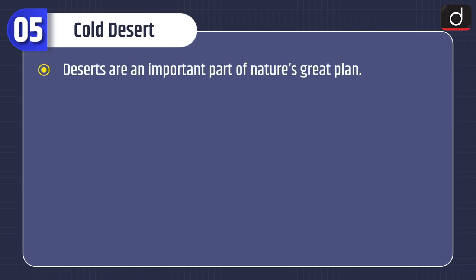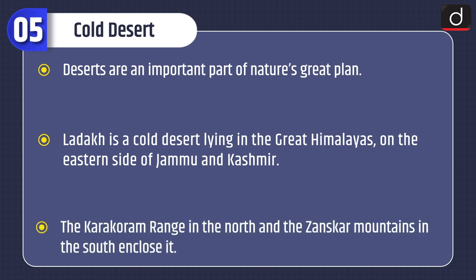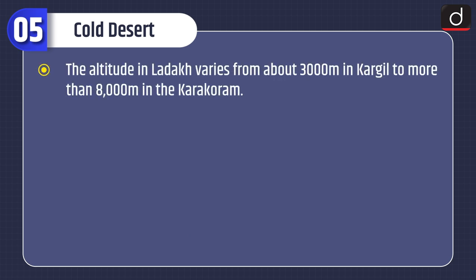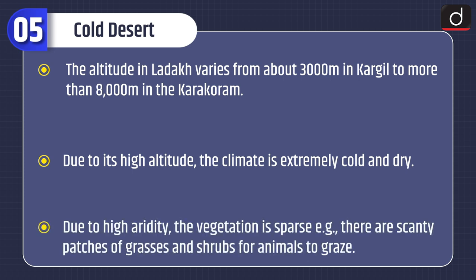Cold deserts are an important part of nature's great plan. Ladakh is a cold desert lying in the Great Himalayas on the eastern side of Jammu and Kashmir. The Karakoram range in the north and the Zanskar mountains in the south enclose it. The altitude in Ladakh varies from about 3,000 m in Kargil to more than 8,000 m in the Karakoram. Due to its high altitude, the climate is extremely cold and dry. Due to high aridity, the vegetation is sparse.